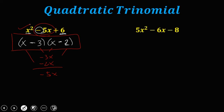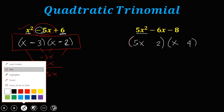For the second example, we use the same trial and error process. Factors of 5x squared: that's 5x times x. For factors of negative 8, let's try arranging with 4 and 2. Now let's check this arrangement.